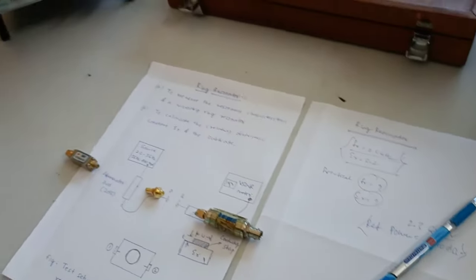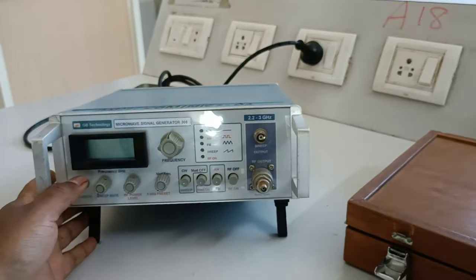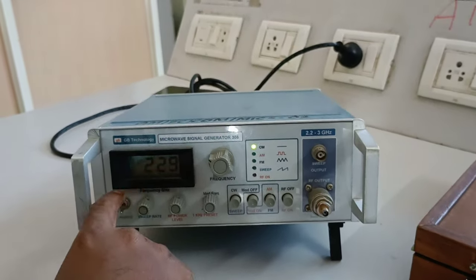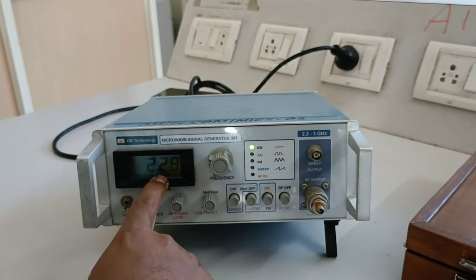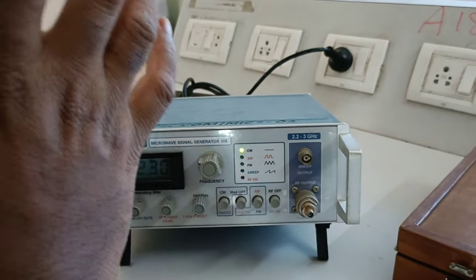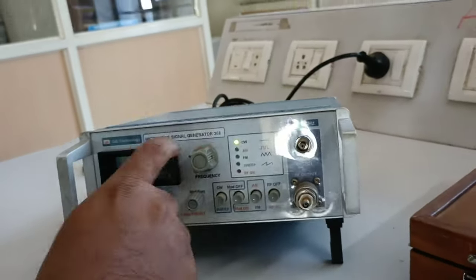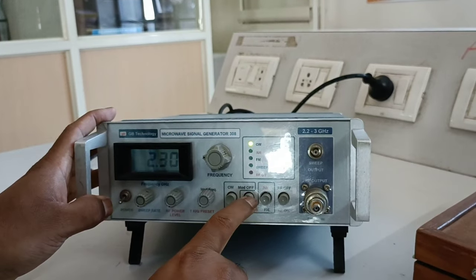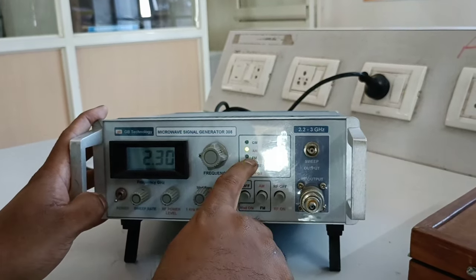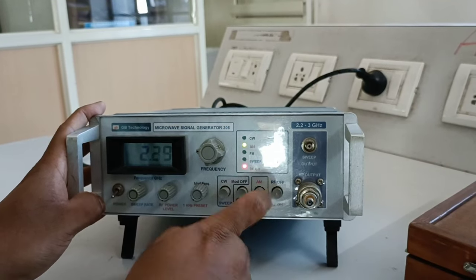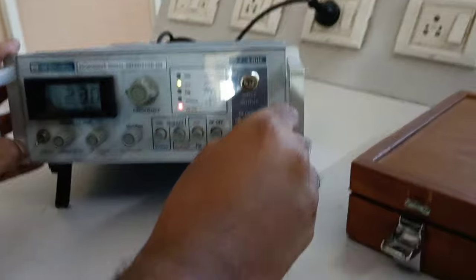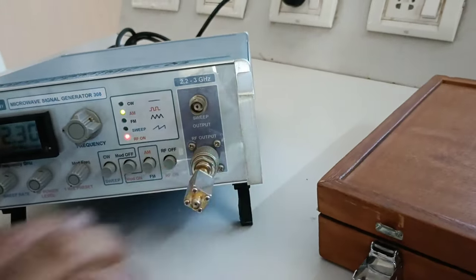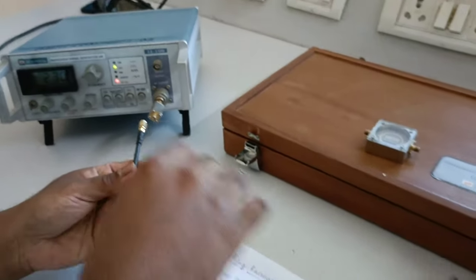So for this, I will switch on the source. As I told, initial settings are already made. Just switch on the source. The frequency, you just, it is a frequency readout meter that will frequency whatever it is coming out of this LCD display that will be in terms of Gigahertz only. Gigahertz. So 2.3 Giga, it is there. Next, minimum minimum, go to this modulation on button. It will directly switch over to AM modulation. RF on. Next, put this attenuator 3 dB.